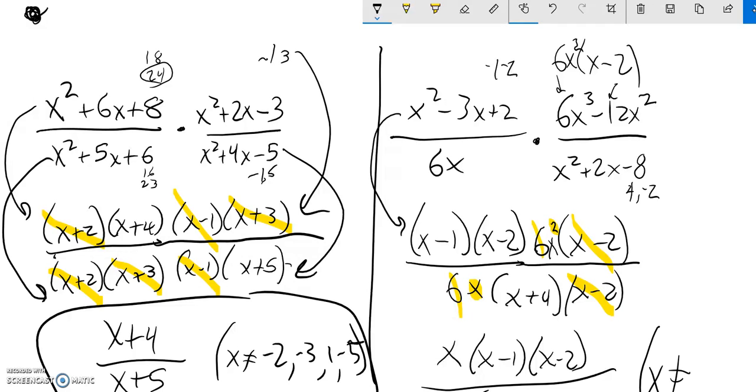And I'm going to keep track of things that it cannot be because I can't divide by 0. It can't be 0, it can't be negative 4, it can't be positive 2. There's my answer.